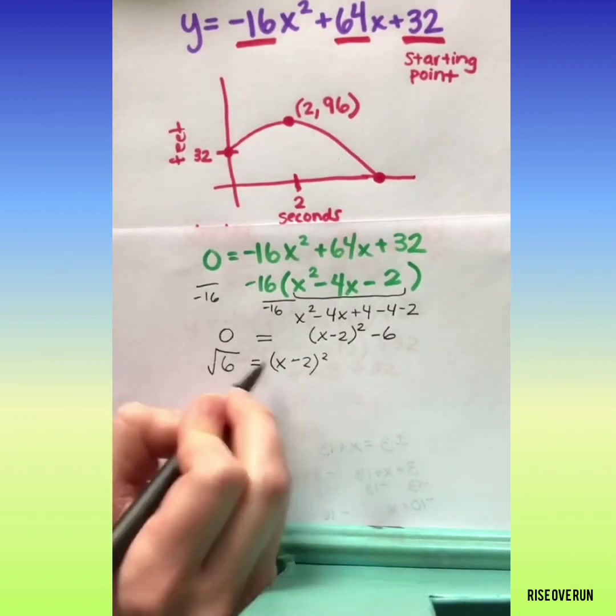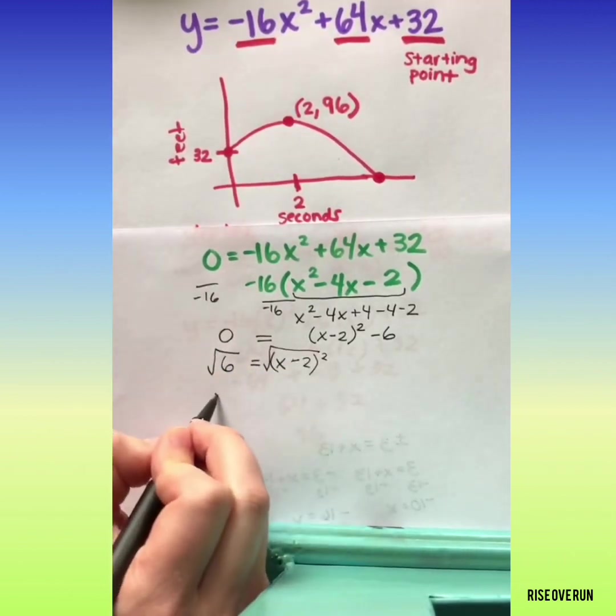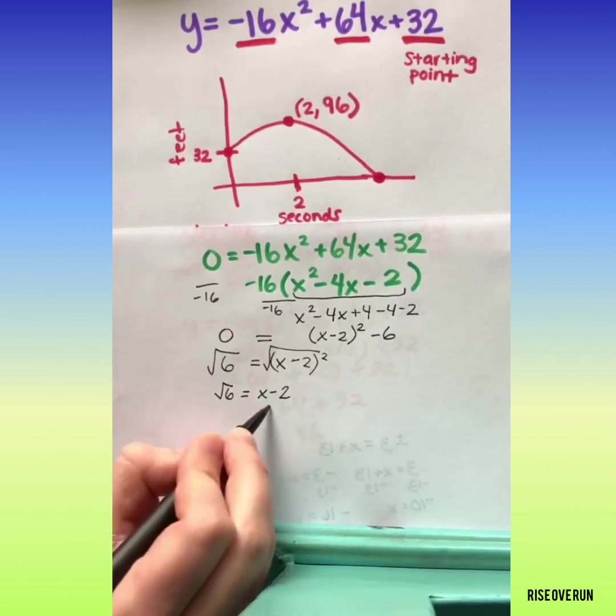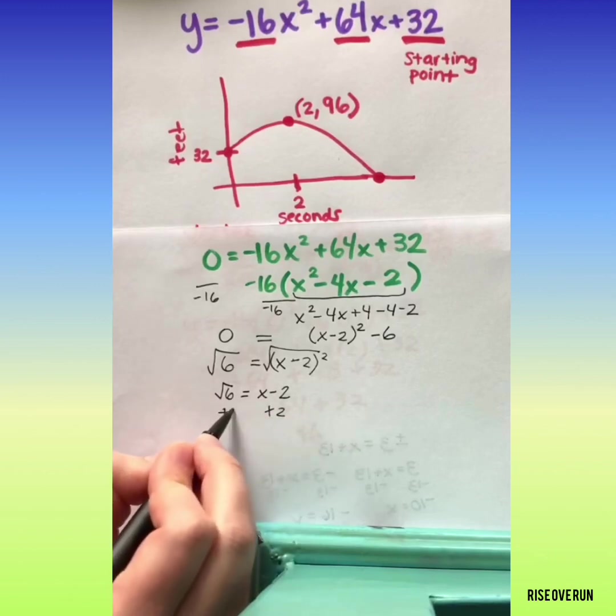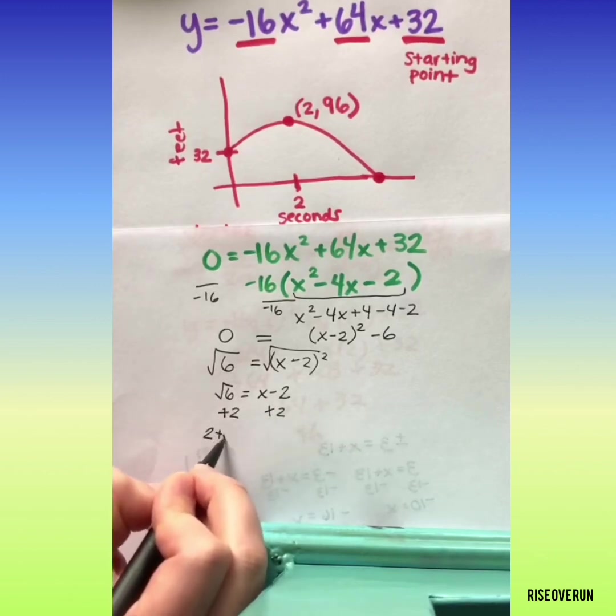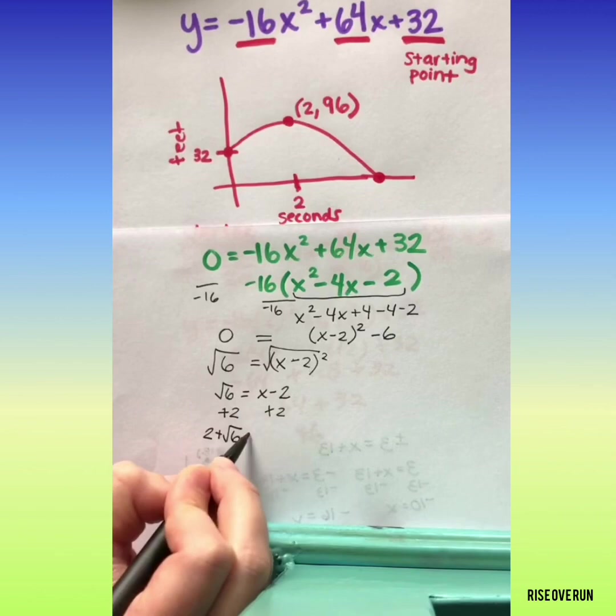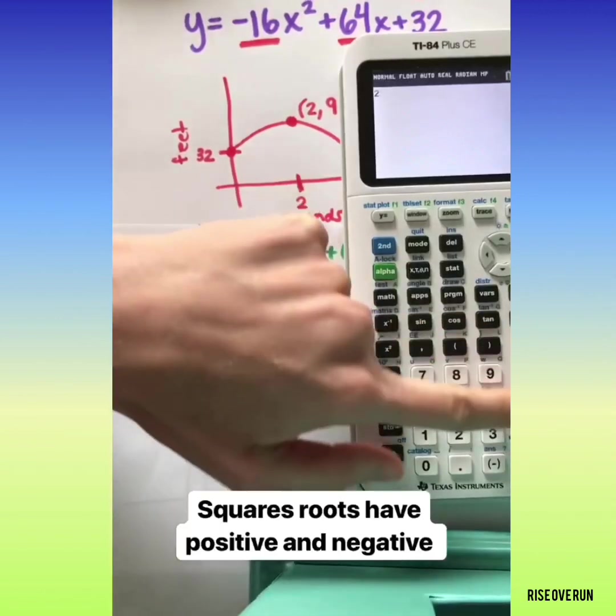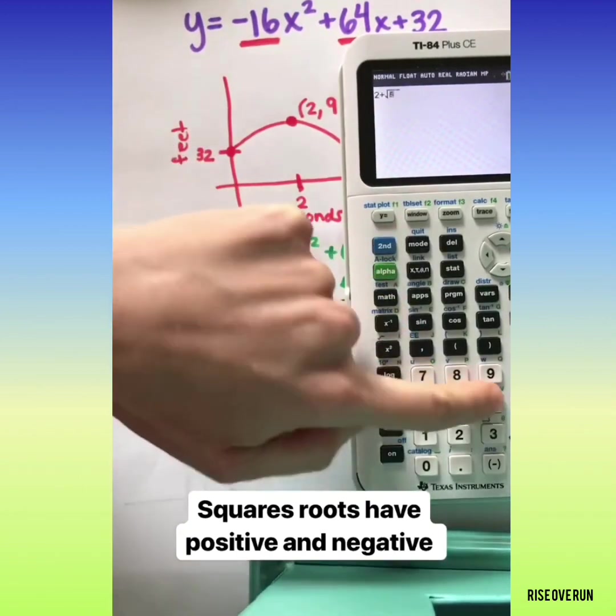Take the square root of both sides. Add 2. Let's get a decimal. 2 plus the square root of 6.